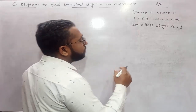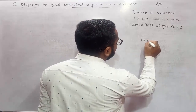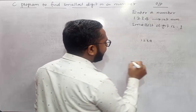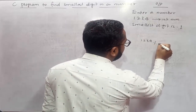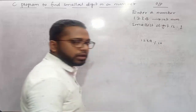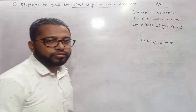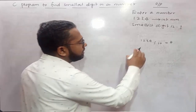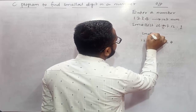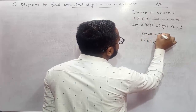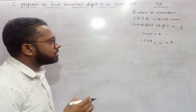Now, how can we find the smallest digit from this number? We need to perform a task: first we find the remainder of the number using the modulus operator. So 1234 mod 10 gives us 4 as the remainder. Before doing this, we first need to assume a small value of 9 — we will consider that the smallest digit is initially 9.